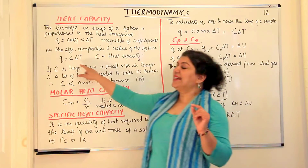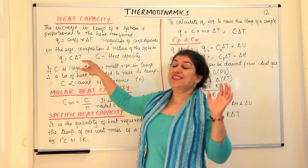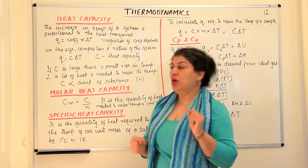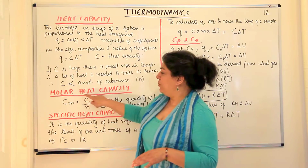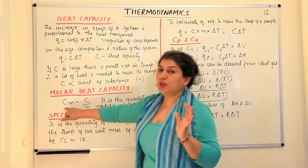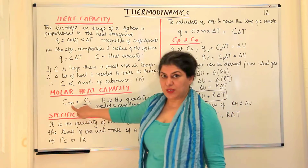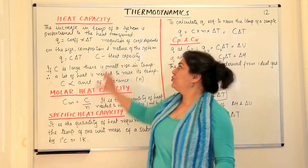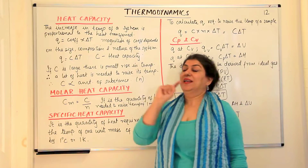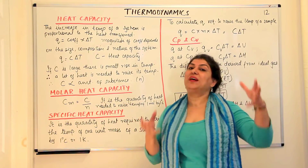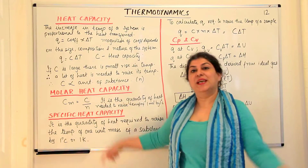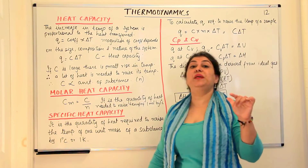Heat capacity is an extensive property. When we find its molar value — that is, the value for one mole — we divide it by the number of moles. This is called molar heat capacity, represented as C with subscript M. Molar heat capacity equals heat capacity divided by number of moles. The moment we calculate it per mole, it is no longer dependent on the amount of substance, so it becomes an intensive property.